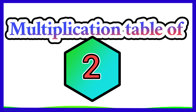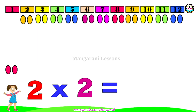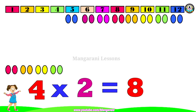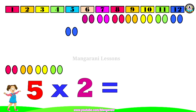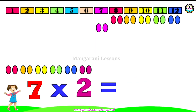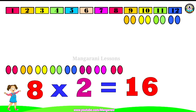Multiplication table of two. One twos are two, two twos are four, three twos are six, four twos are eight, five twos are ten, six twos are twelve, seven twos are fourteen, eight twos are sixteen.